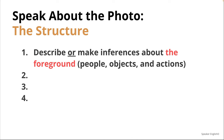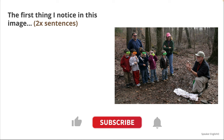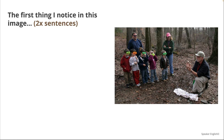This template is going to help him know what to say next and build his confidence. The first thing is to describe or make inferences about the foreground — the first thing you see. You can say: 'The first thing I notice in this image is...' — you can use that phrase to start any Speak About the Photo question. For example: 'The first thing I notice in this image is an older man crouching down on the floor looking at a couple of objects in his hand. I'm not sure what they are exactly, but he's looking at them very intently, so I guess he's trying to explain to the children what these objects are and how they work.'